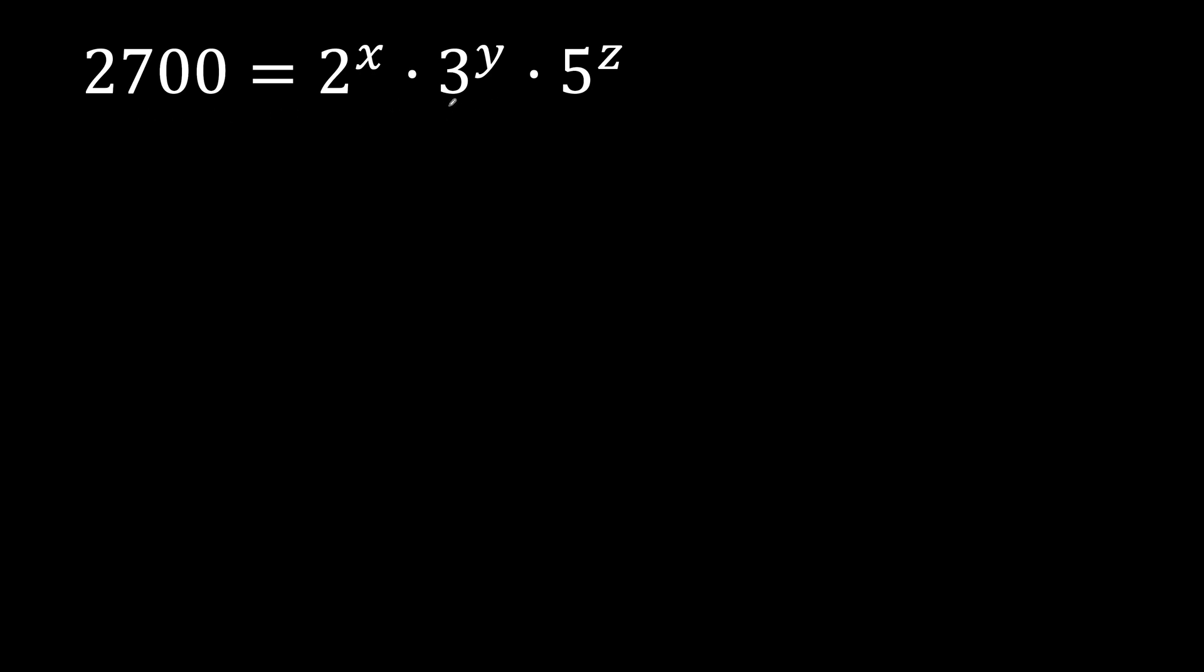This statement or equation tells us that 2700 can be written as 2 to the power of x times 3 to the power of y times 5 to the power of z. It means that 2700 is divisible by 2, by 3, and by 5.